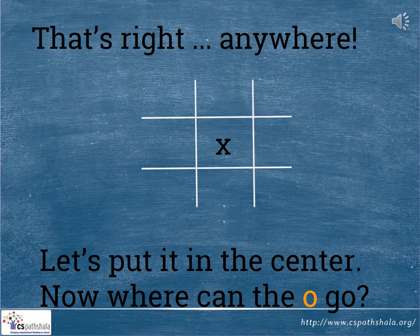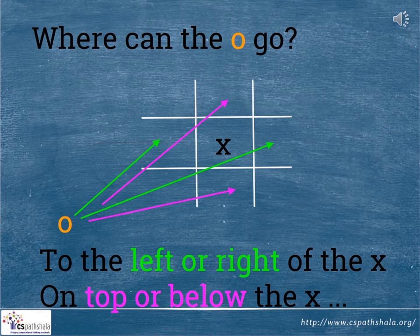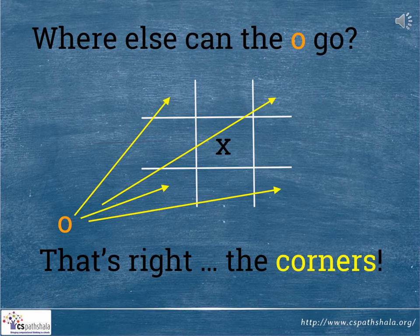Now where can the knot go? The knot can go to the left or right of the cross. It can also go on top or below the cross. Think — where else can the knot go? That's right! The knot can go into the corners.